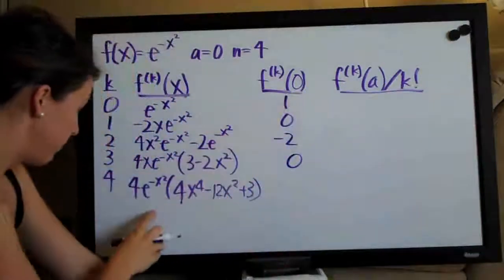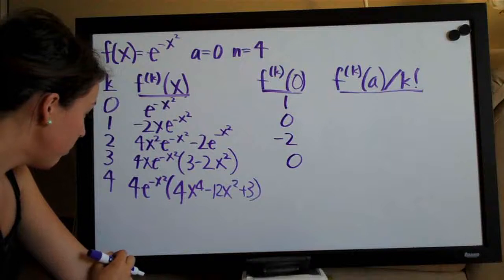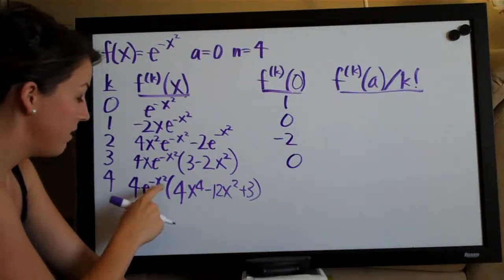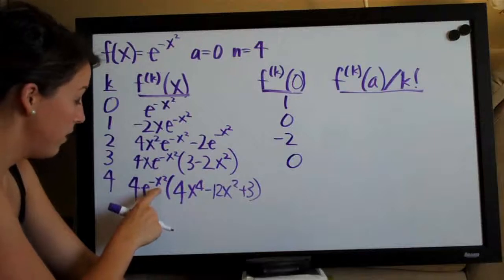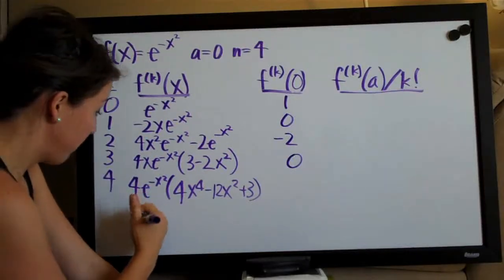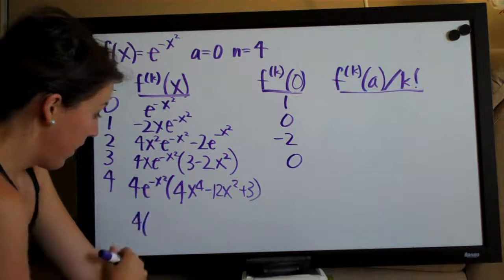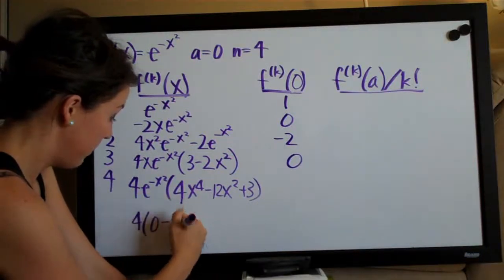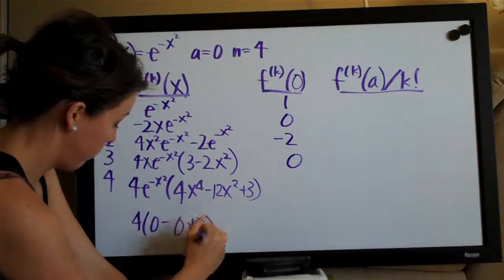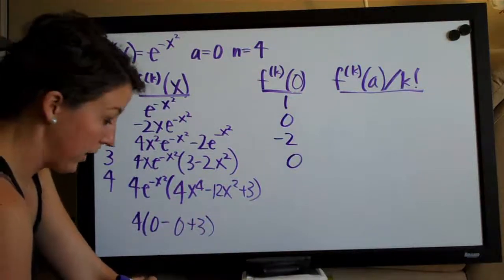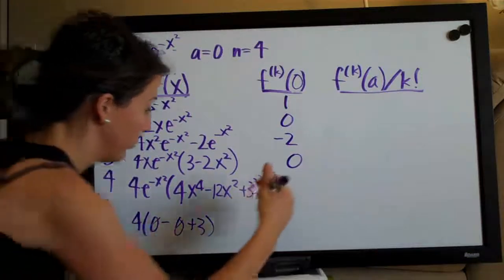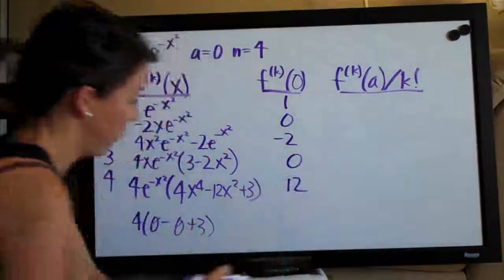We'll have zero out in front here in this x, which is actually going to cancel everything out because we'll have zero times three and we'll have zero times zero again. So, this is going to be zero. And then plugging in zero to the last one here, we'll have four. E to the zero was one. So, four times one, we'll just have four out in front. And then we'll have four times zero minus zero plus three. So, looking like twelve because these two will cancel obviously and we'll just be left with four times three. So, twelve.